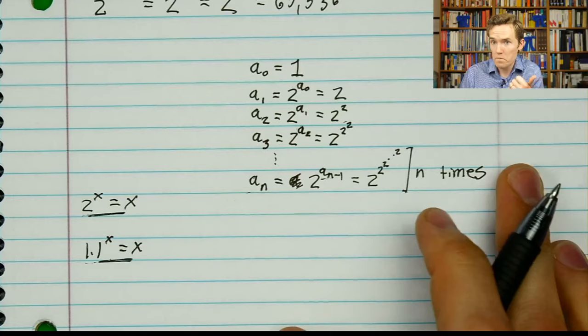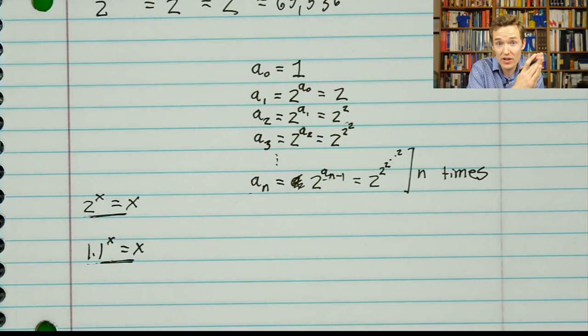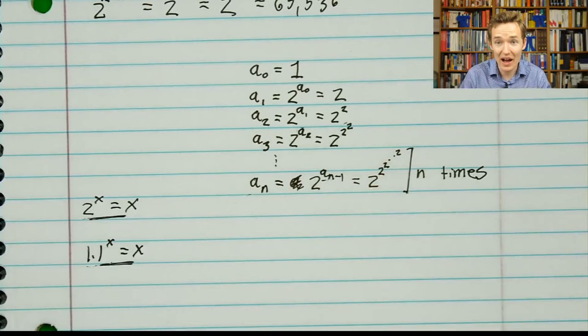Another way to phrase this: the equation 1.1 to the power x equals x has a solution — something where when you plug it into the function you get itself. This didn't hold when we were doing it with 2. If we had 2 to the x equals x and tried values like 0, 1, or anything in between, there's actually no answer, whereas evidently we just saw an answer in this case. This starts raising interesting questions — first of all, where's the switch? What number between 1 and 2 is the point where it goes from staying finite to blowing up incredibly quickly?